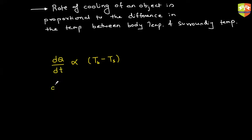So if I put a proportionality constant, then DQ/DT should be equal to that constant times the temperature difference. Are all of you able to understand? Any doubts?